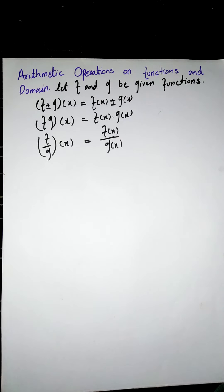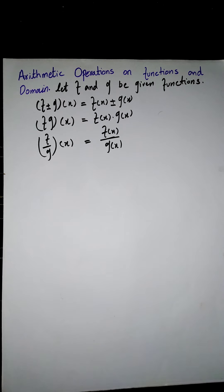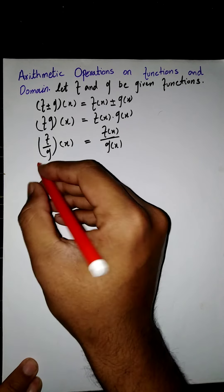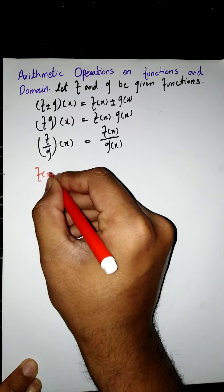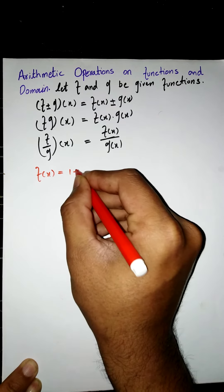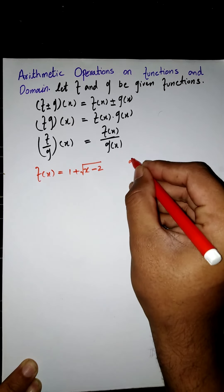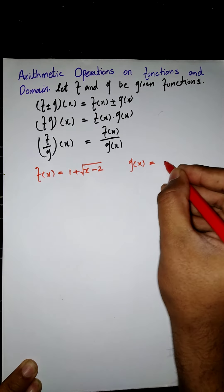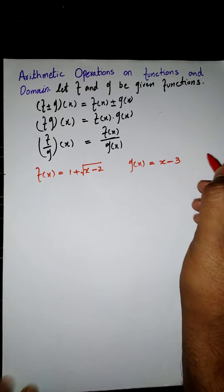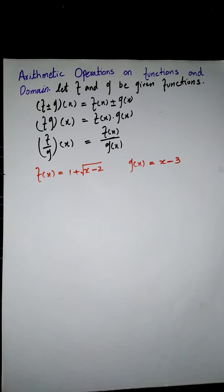Let's look at an example. Suppose we have f of x equals one plus the square root of x minus two, and g of x equals x minus three. These are our two given functions. We will apply arithmetic operations and then find the domain of the resulting function.